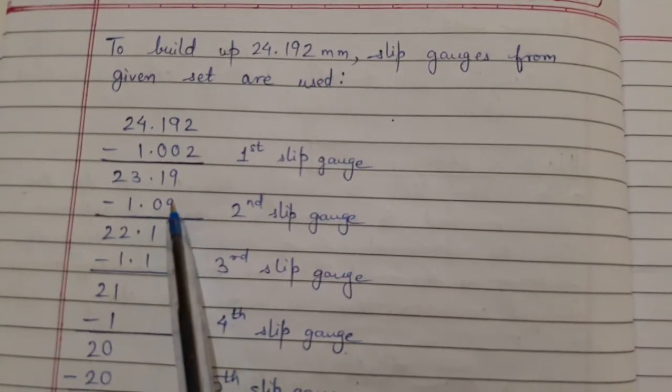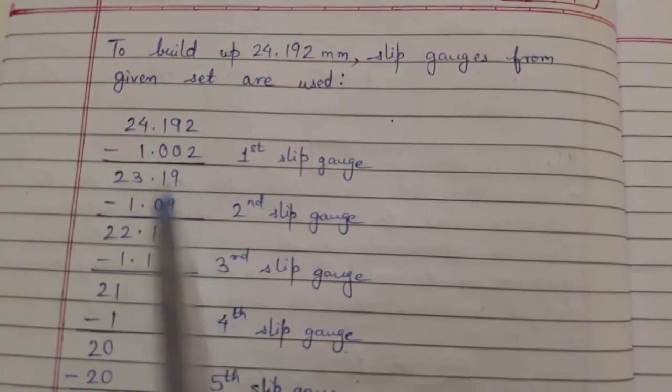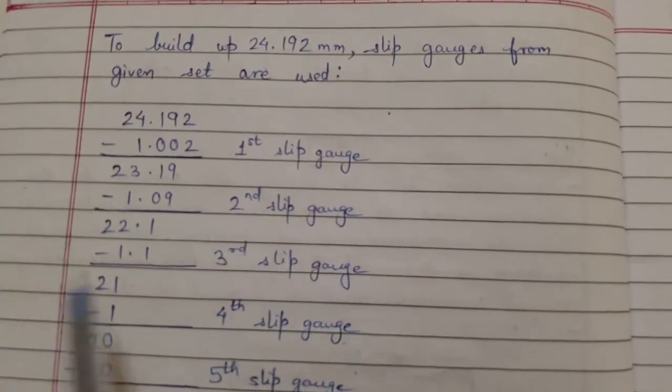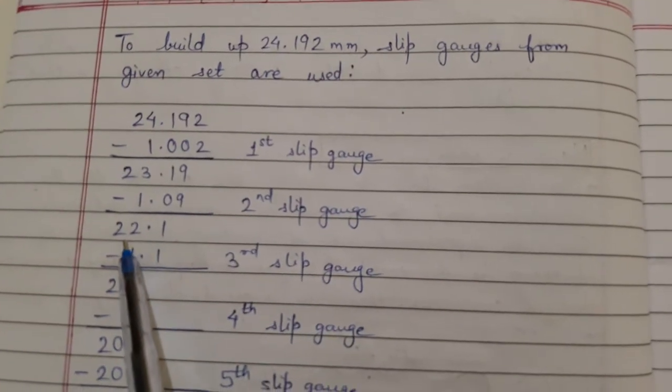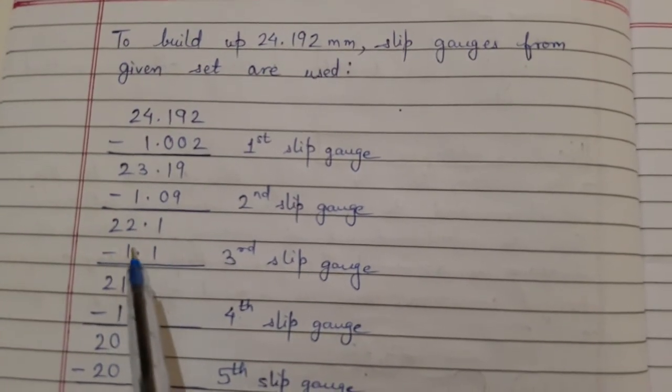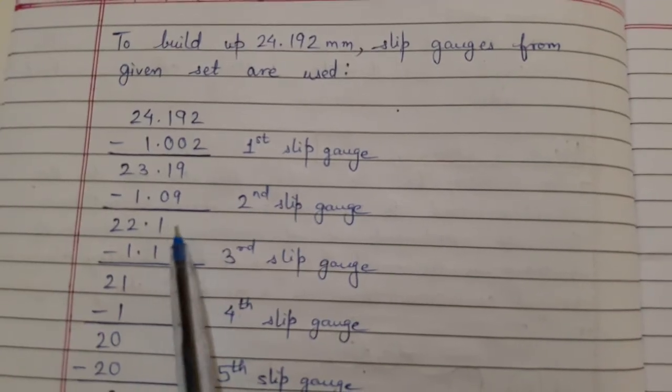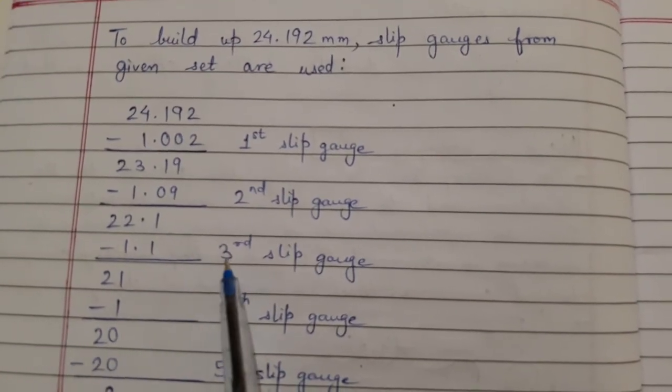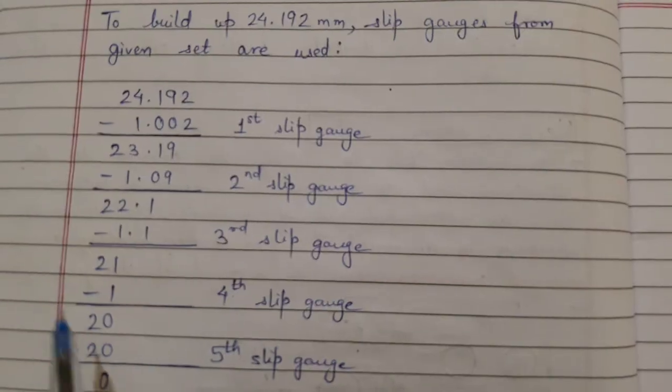Then we have another dimension, so we will try to satisfy the first decimal place by using the third slip gauge, and then the ones place and then the tens place.